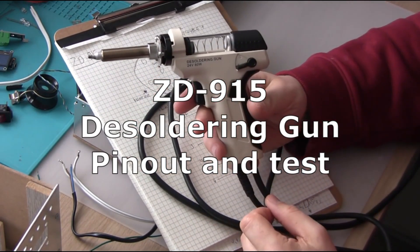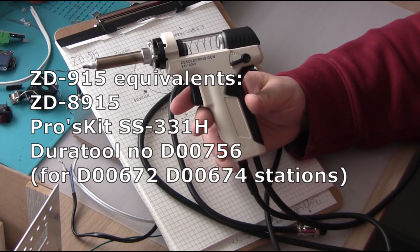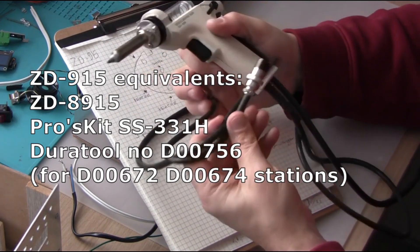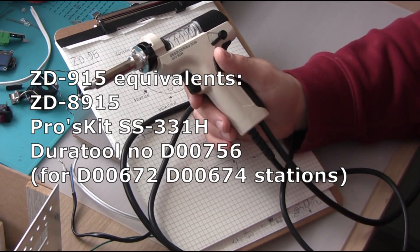This is the soldering gun from the popular ZD915 station. You can buy them new separately from the station for a reasonable price, should be about 30 US dollars.